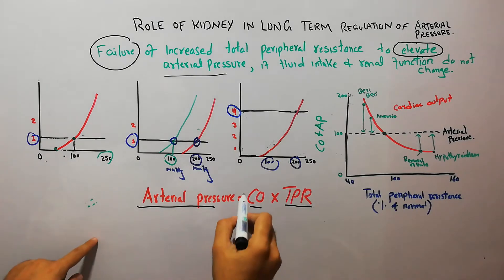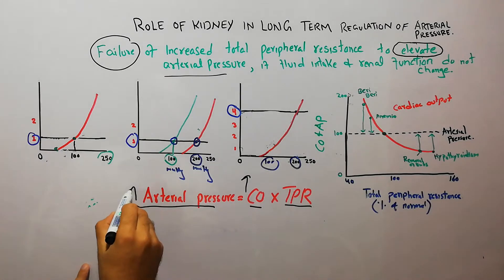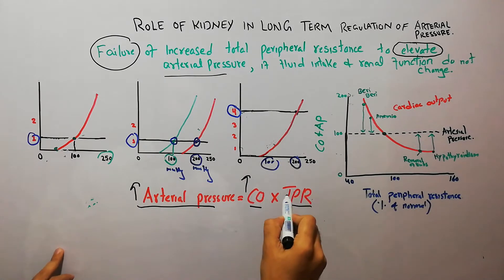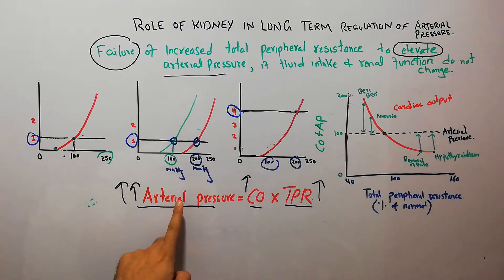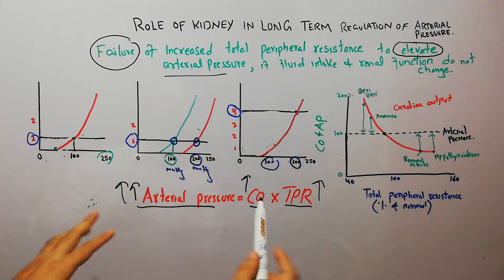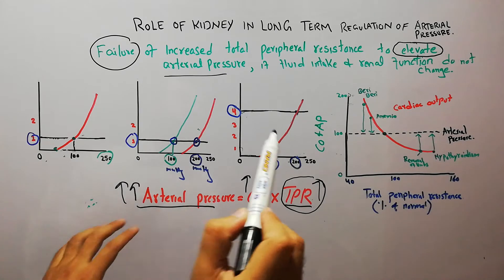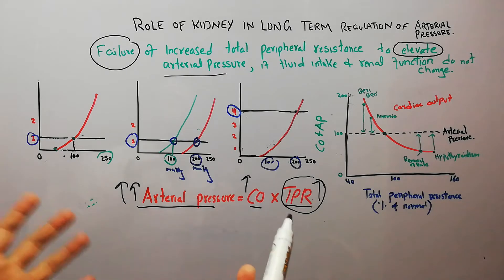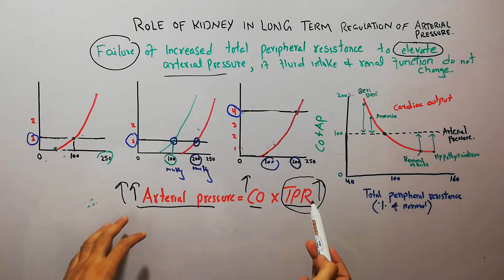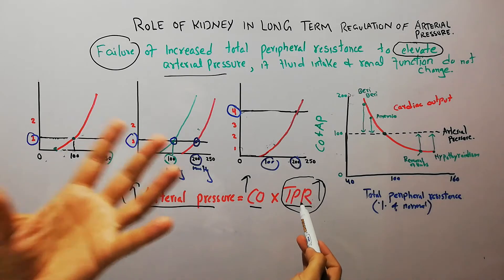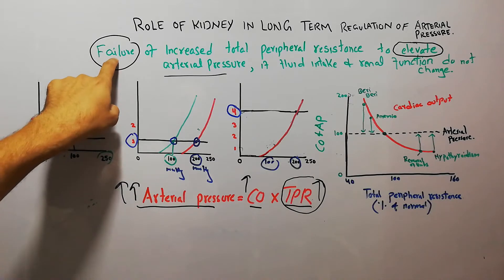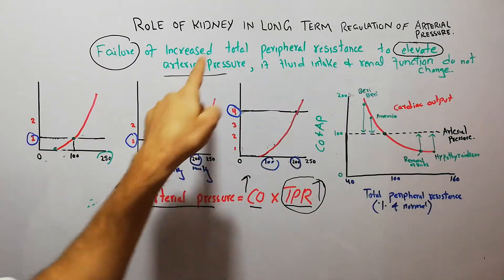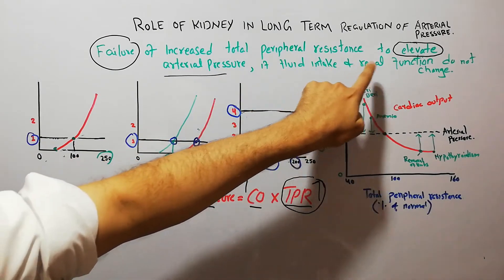If the cardiac output increases, the arterial pressure will increase. Similarly, if the total peripheral resistance increases, the arterial pressure should increase again, because arterial pressure is the product of cardiac output and total peripheral resistance. But if the increase in total peripheral resistance fails to increase the arterial pressure, why can such a situation occur? That's what we are going to discuss today.